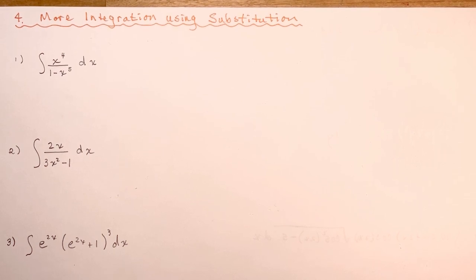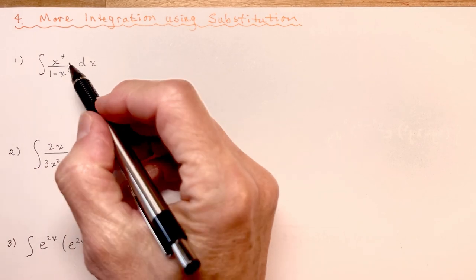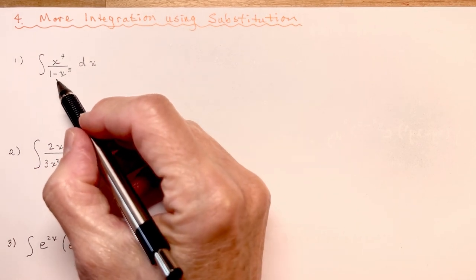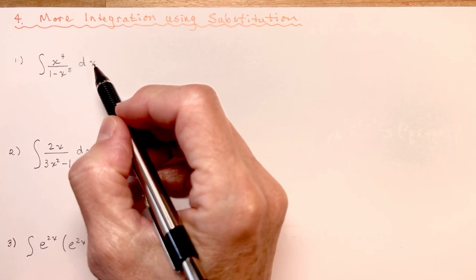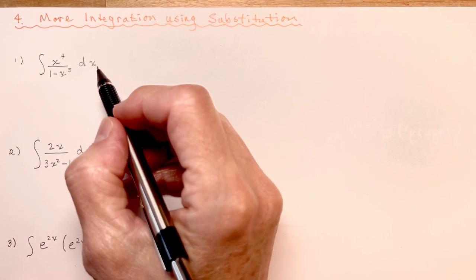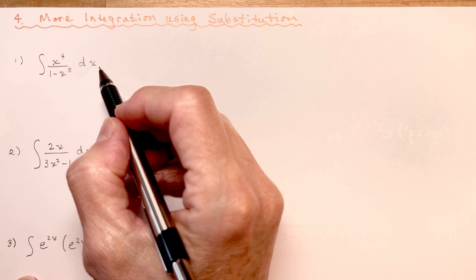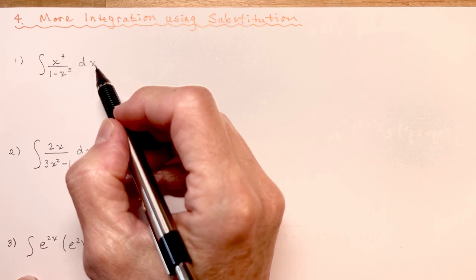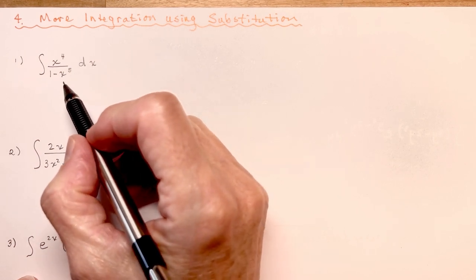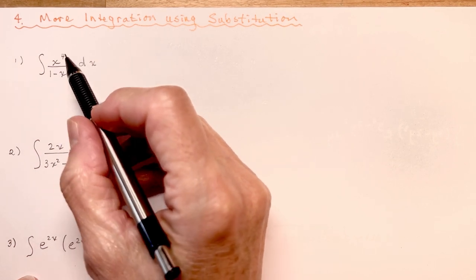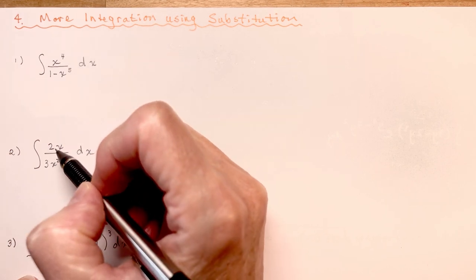Here we go. The first one asks: what is the integral of x to the 4th over 1 minus x to the 5th dx? Now remember that what you're looking for is something that you can take the derivative of and get something similar to the other part.